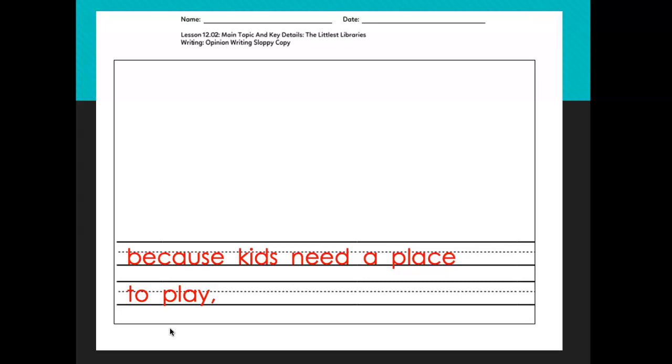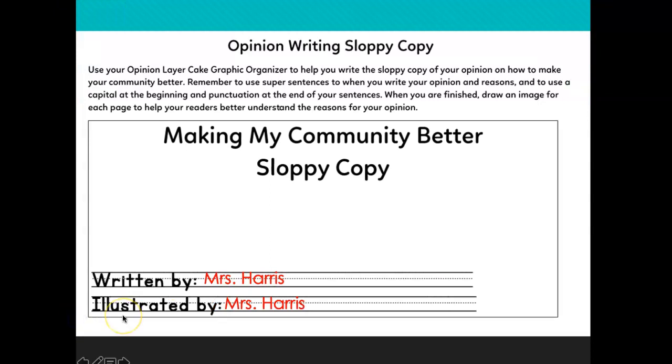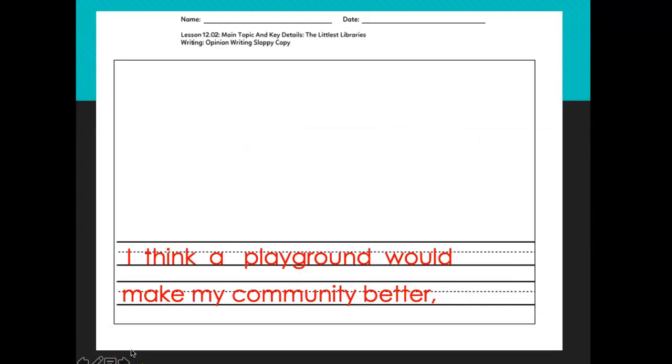Okay, so we have our title page, which just has our name. And like I said, if you're not using this special paper, you could save your title page for later. You don't need to do it now. We have our beginning sentence, I think, and then you're going to write what you think would make your community a better place with a comma. Do you have that?